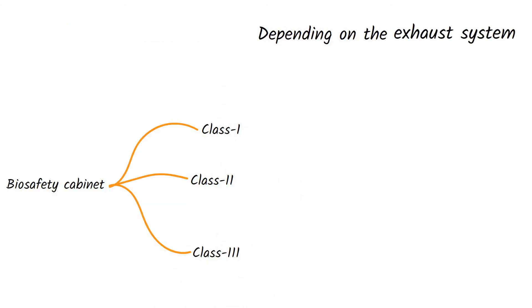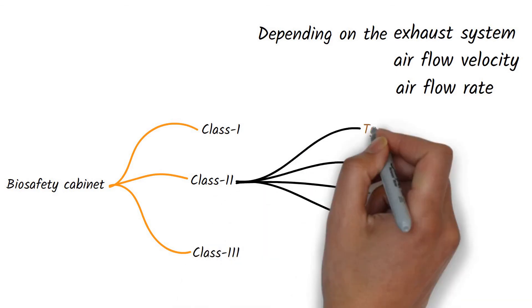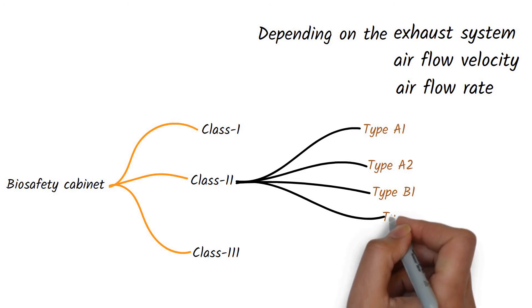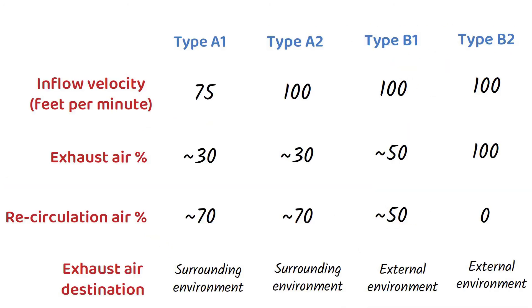Depending on the exhaust system, airflow velocity, and airflow rate, the Class 2 biosafety cabinets are further classified as type A1, A2, type B1 and B2. Look at this table to find how these types differ from each other. The most widely used cabinets belong to the Type A2 of Class 2.